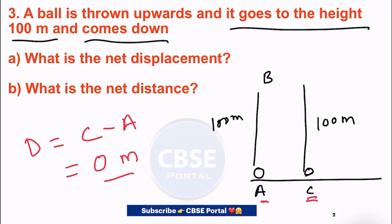Now the second part of question three asks: what is the net distance? Net distance is the total path traveled. Distance is total path traveled. So total path is from A to B, then B to C. From A to B is 100 meters, B to C is 100 meters. This is a total of 200 meters.